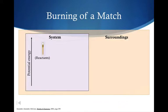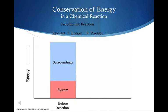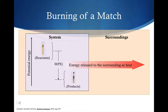If we're going to burn a match, you can put up a graph of potential energy in the system versus the surroundings. So if you have a change in energy where the reactants have a higher potential energy than the products, then you know there was energy released to the surroundings as heat. This is known as an exothermic reaction — when the potential energy of the reactants is more than the products and energy is released to the surroundings.